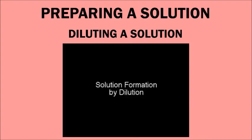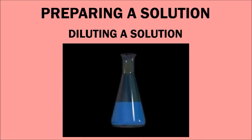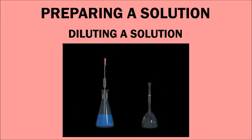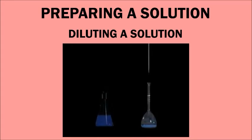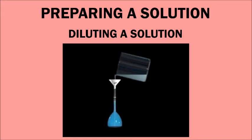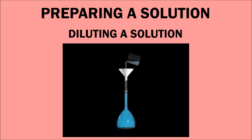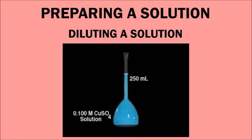To prepare 250 milliliters of a 0.100 molar copper sulfate solution from a 1 molar stock solution, we first withdraw precisely 25 milliliters of the stock solution using a 25 milliliter pipette. This is added to a 250 milliliter volumetric flask. Water is added and the flask is swirled to ensure good mixing, then more water is added to bring the volume to exactly 250 milliliters, giving a final solution of 0.100 molar copper sulfate.